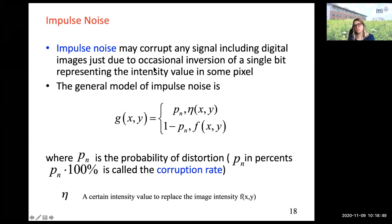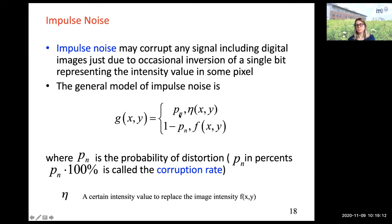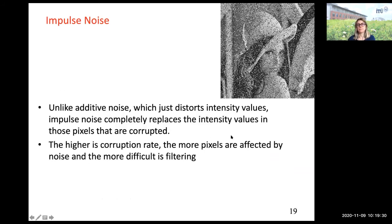Salt and pepper noise can corrupt any signal due to occasional inversion of a single bit in the intensity value, or it can map an intensity to a certain value eta with some probability — called the probability of distortion. This is the model of impulsive noise. It's really like a mask: with some probability, the pixel intensity is converted to eta; with one minus that probability, the image intensity stays as F.